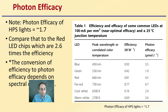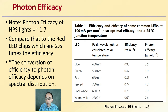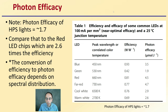We're looking at photon efficacy here. Note that the photon efficacy of HPS lights is about 1.7, compared to red LED chips which are 2.6 times the efficiency. So if we look at our LED red at 4.5, HPS lights are only about 1.7 for that comparison. The conversion efficiency of photon efficacy depends on spectral distribution — we want to be aware of exactly what wavelengths are being produced by that particular light source.